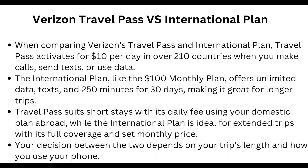The Verizon Travel Pass activates for $10 per day in 210 countries when you make a call, send a text, or use data. The International Plan, like the $100 monthly plan, offers unlimited data, texts, and 250 minutes for 30 days, making it great for longer trips. Travel Pass suits short stays using your domestic plan abroad, while the International Plan is ideal for extended trips with full coverage and a set monthly price.